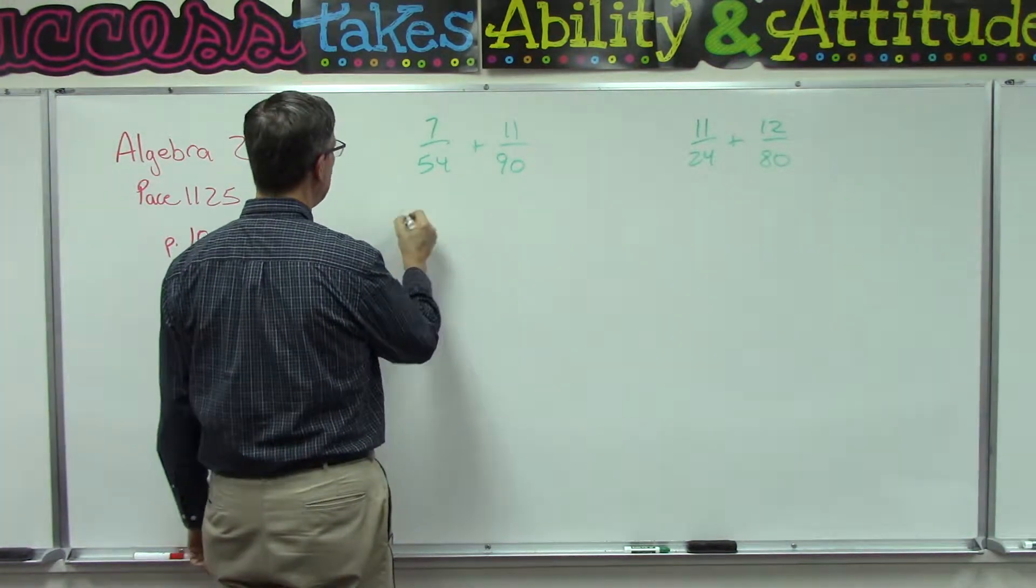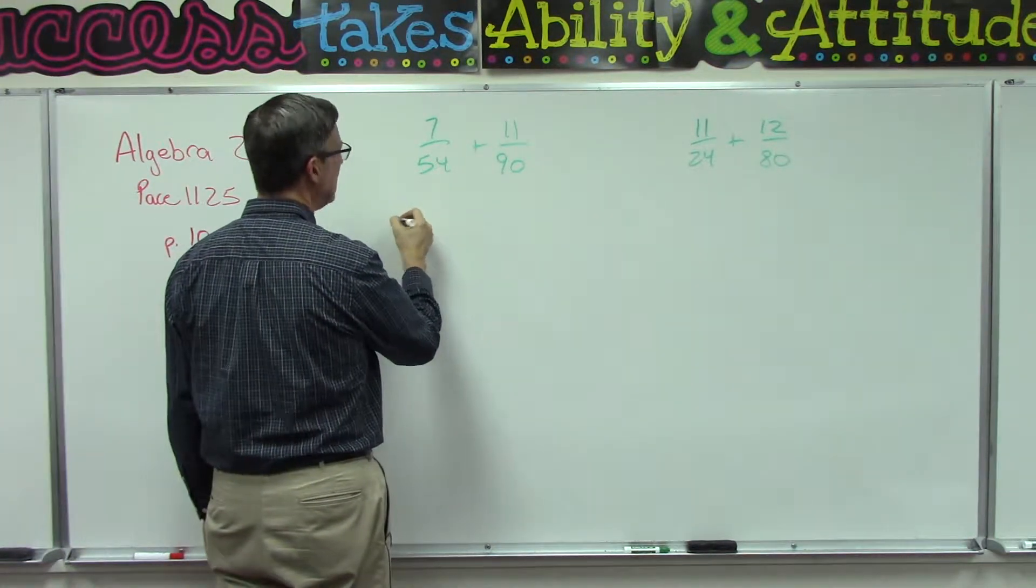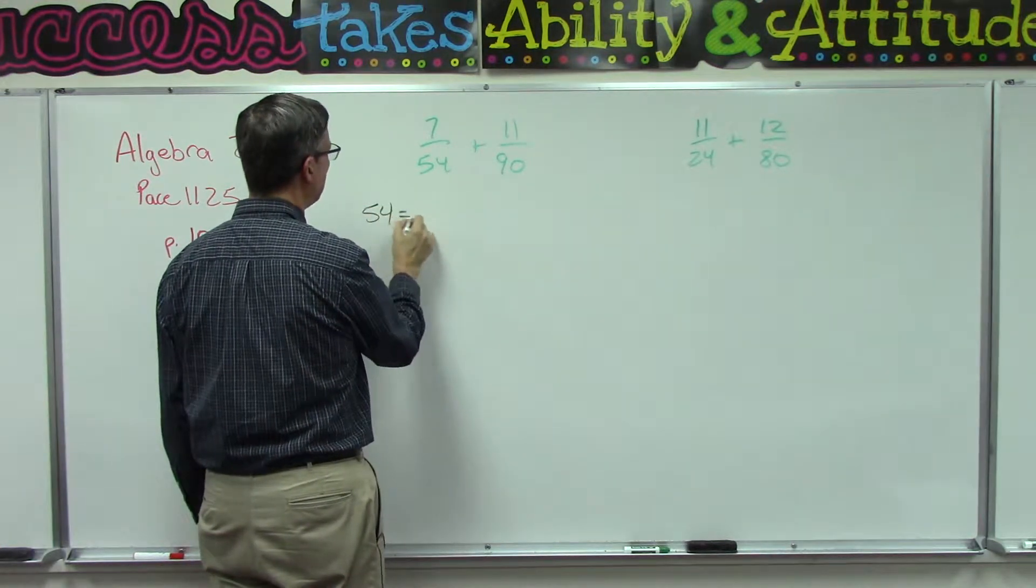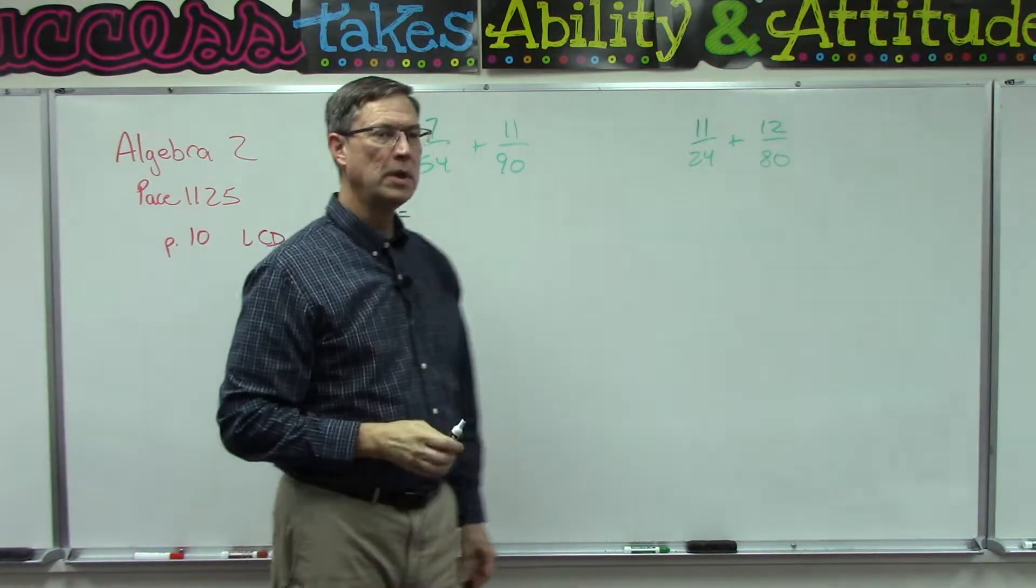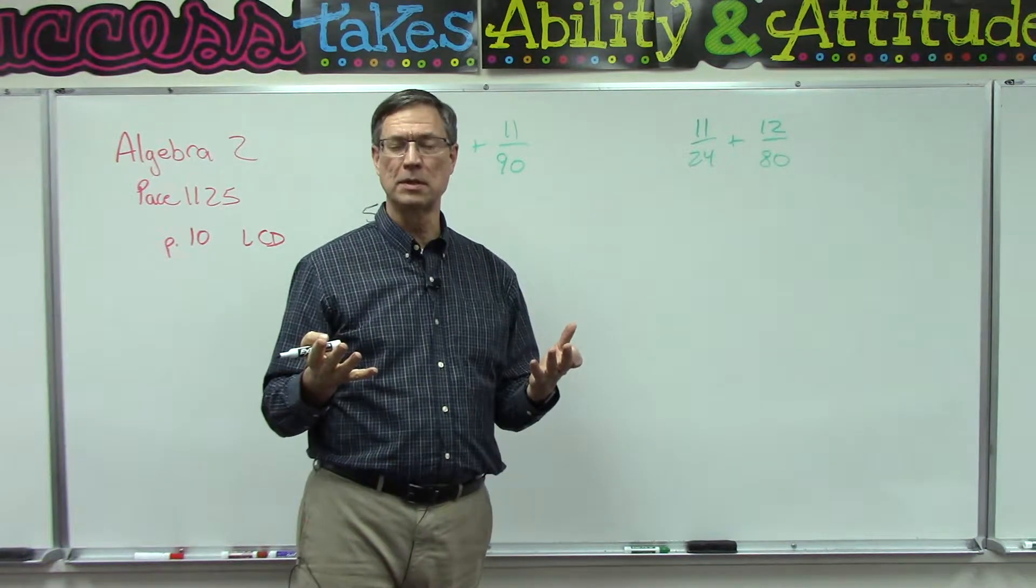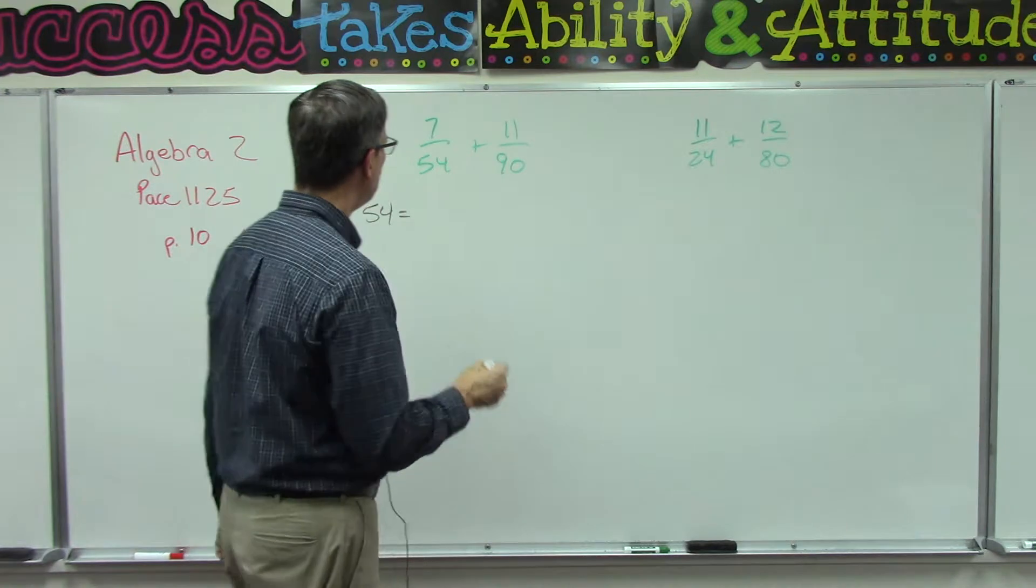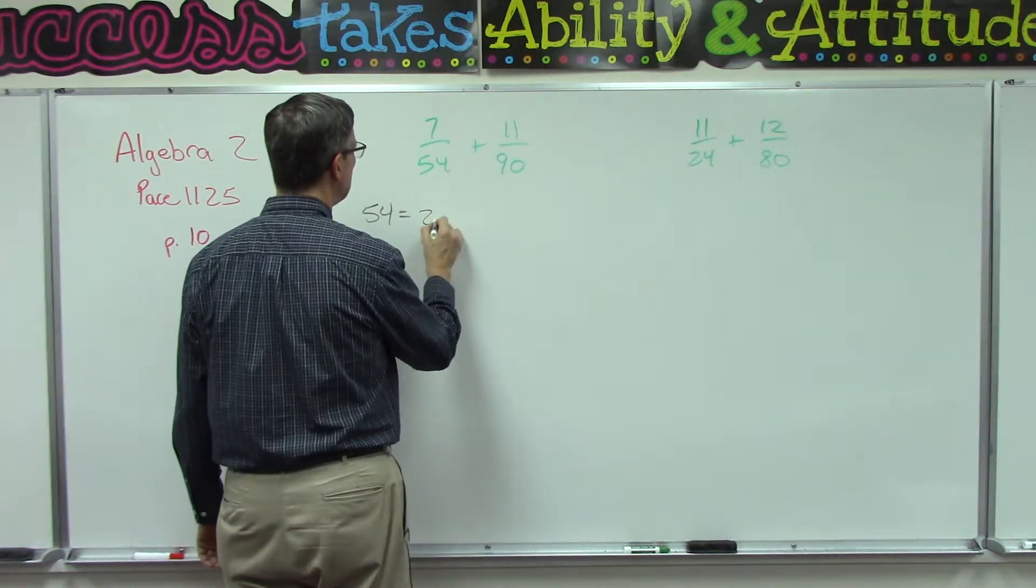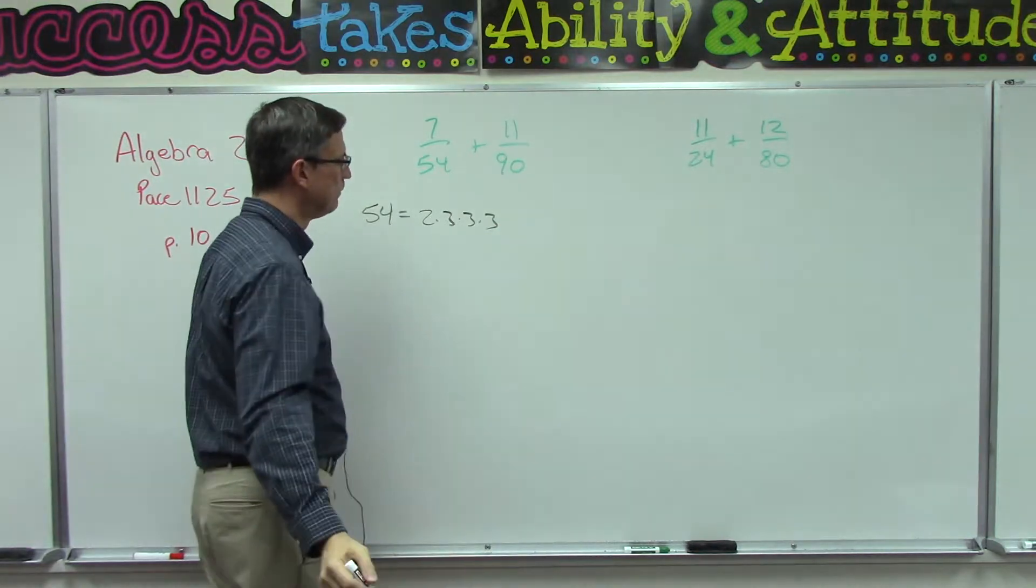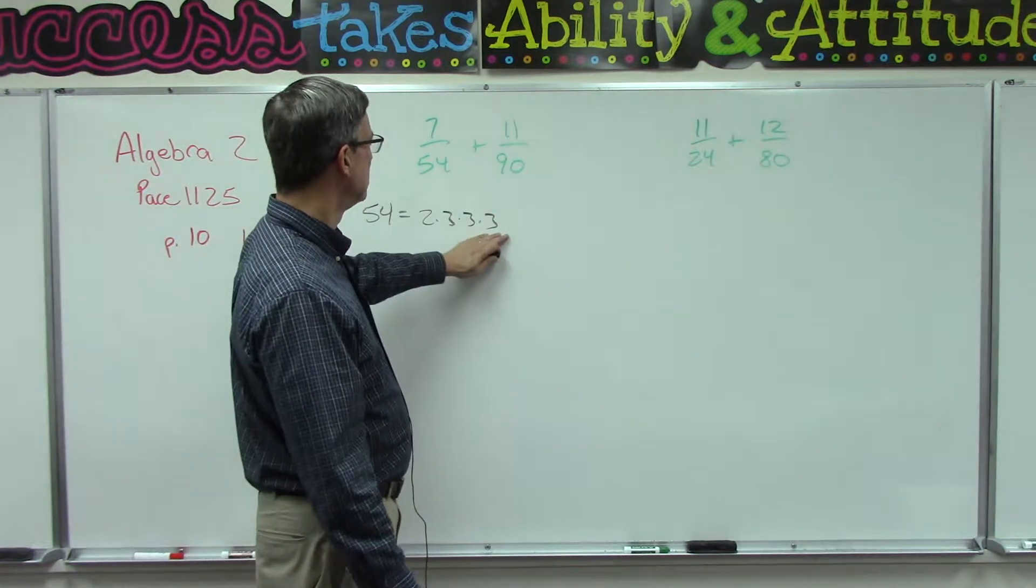How do we find the least common denominator of two big numbers? The way we do that is we break down each denominator to find out what are all the prime numbers that make it up. Well, 54 is made up of 6 times 9. So the prime factors would be 2 times 3 times 3 times 3.